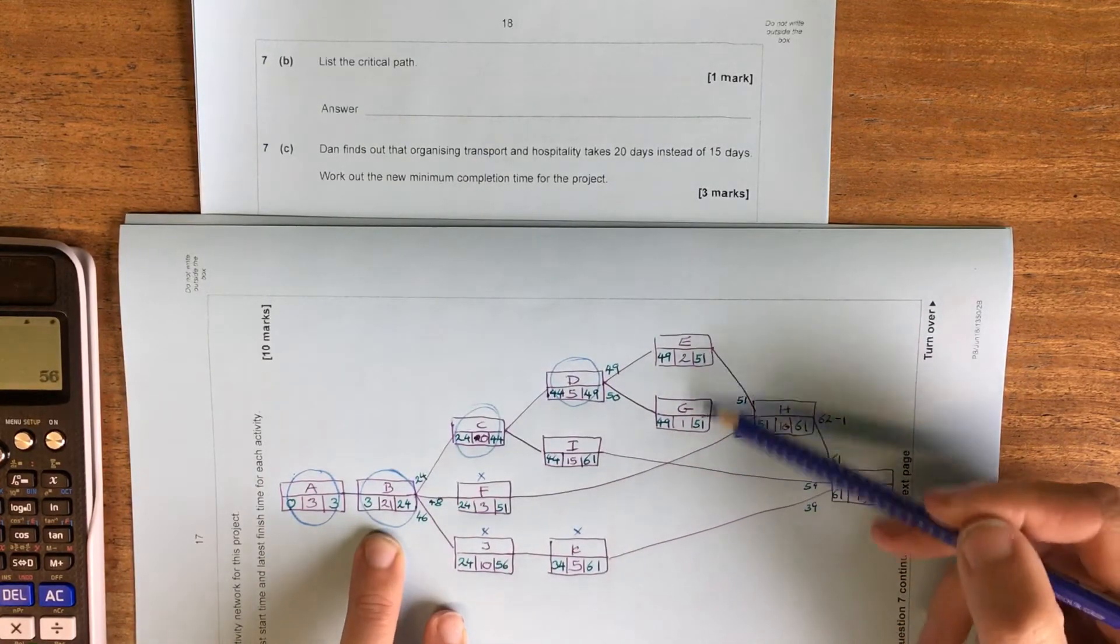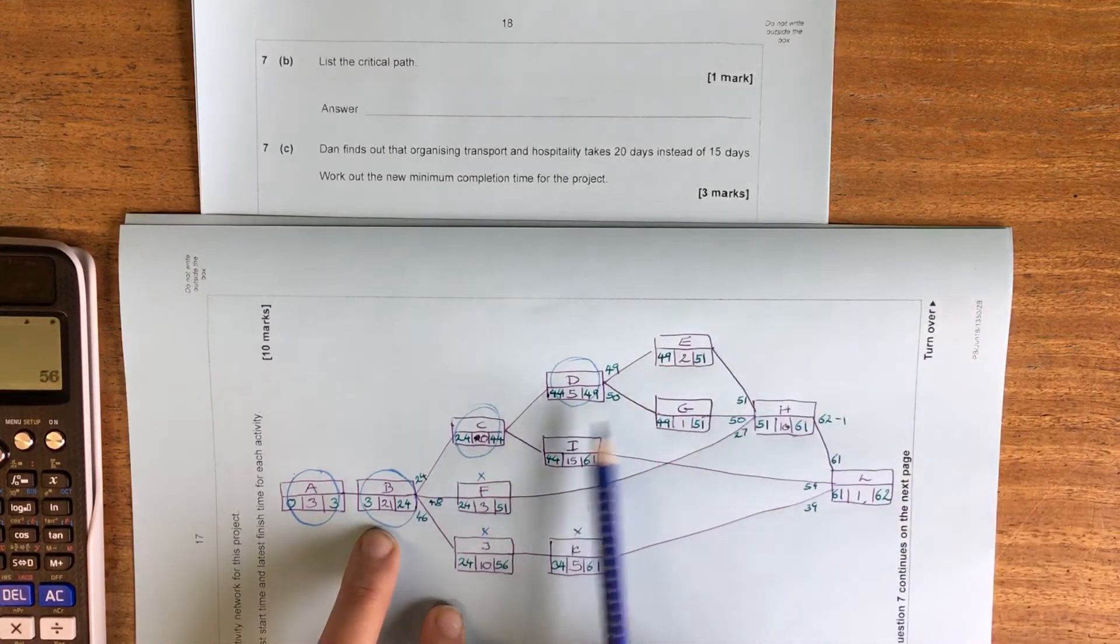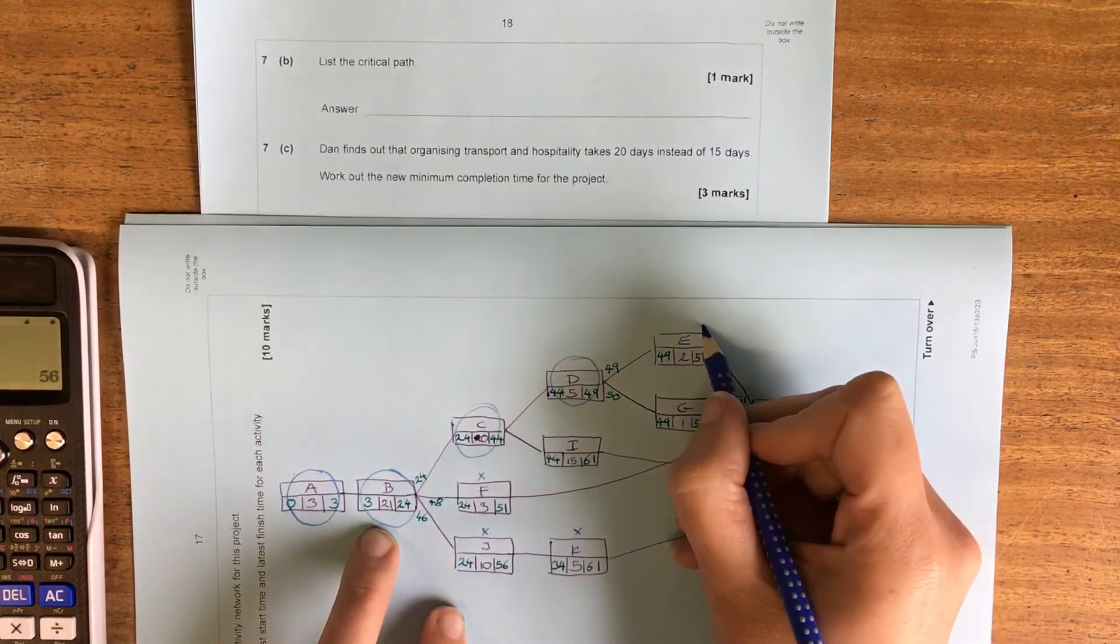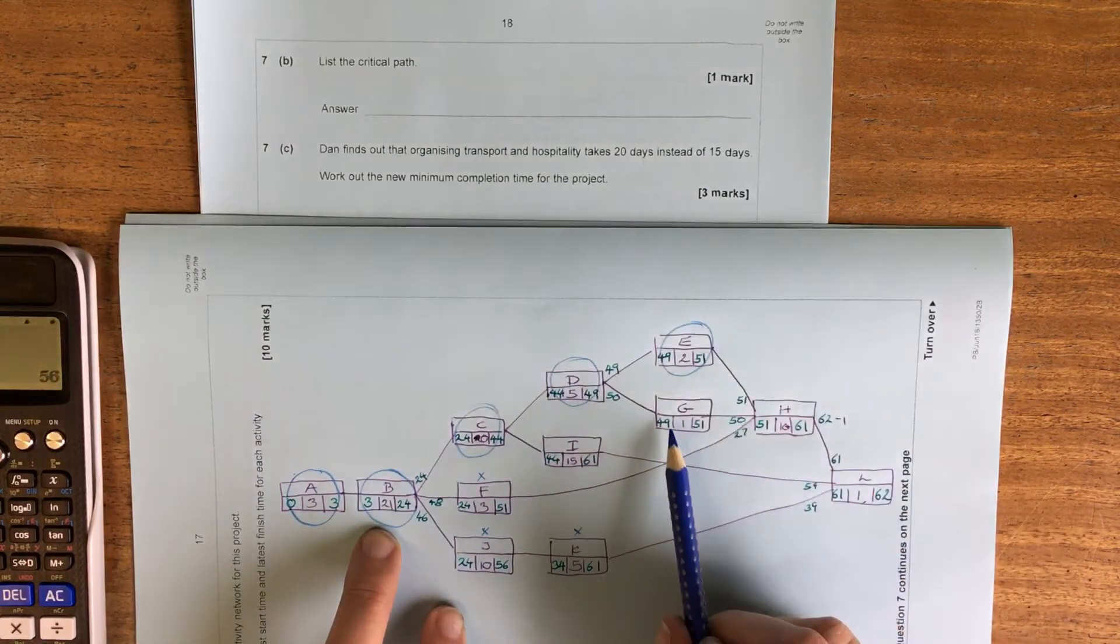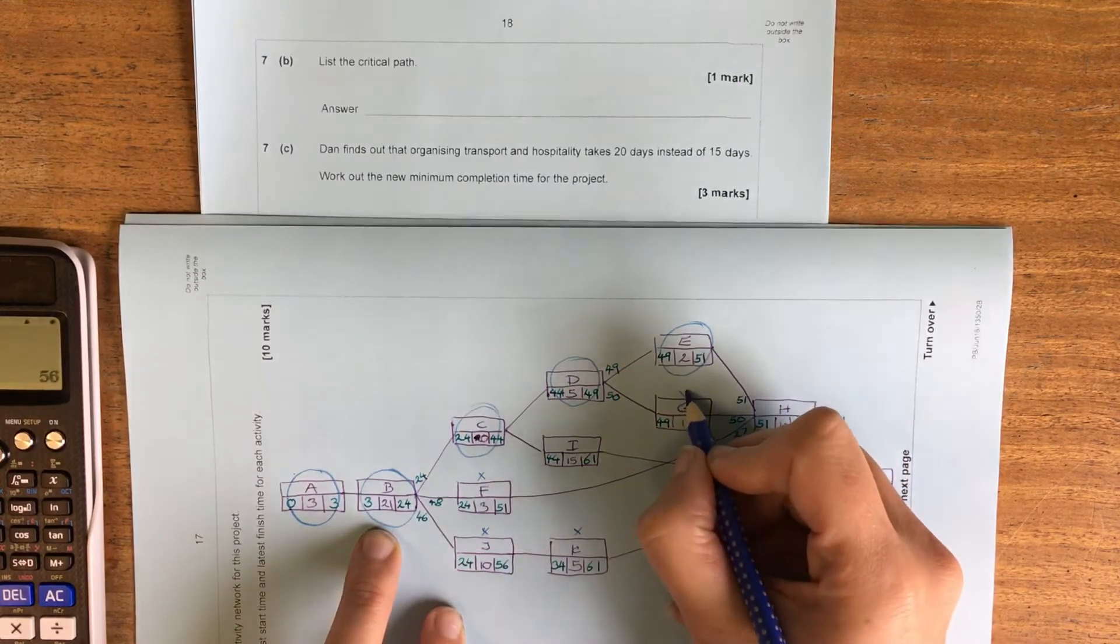That means one of these two or possibly both are also going to be critical. So 49 and 2 is 51. So 49 and 1 isn't 51. That one's not critical.